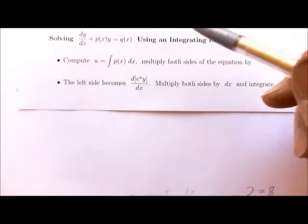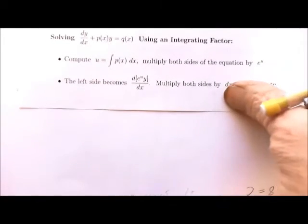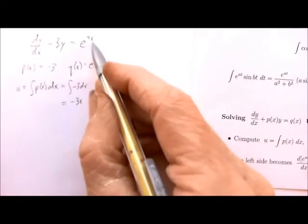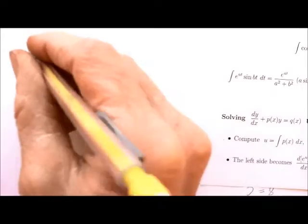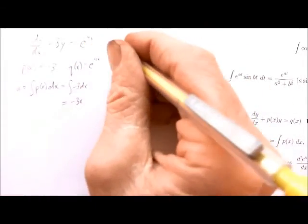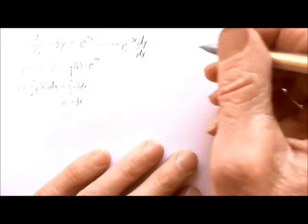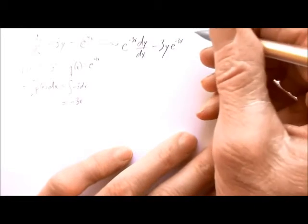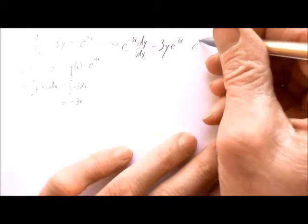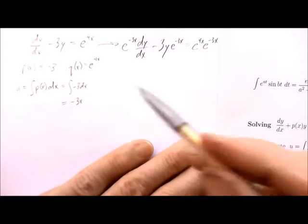Our directions tell us to compute u as the integral of p(x) dx and then multiply both sides of the equation by e^u. In this case, we multiply both sides of our original equation by e^(−3x), giving us: e^(−3x) times (dy/dx minus 3y) equals e^(4x) times e^(−3x). So we've found u and multiplied both sides by e^u.